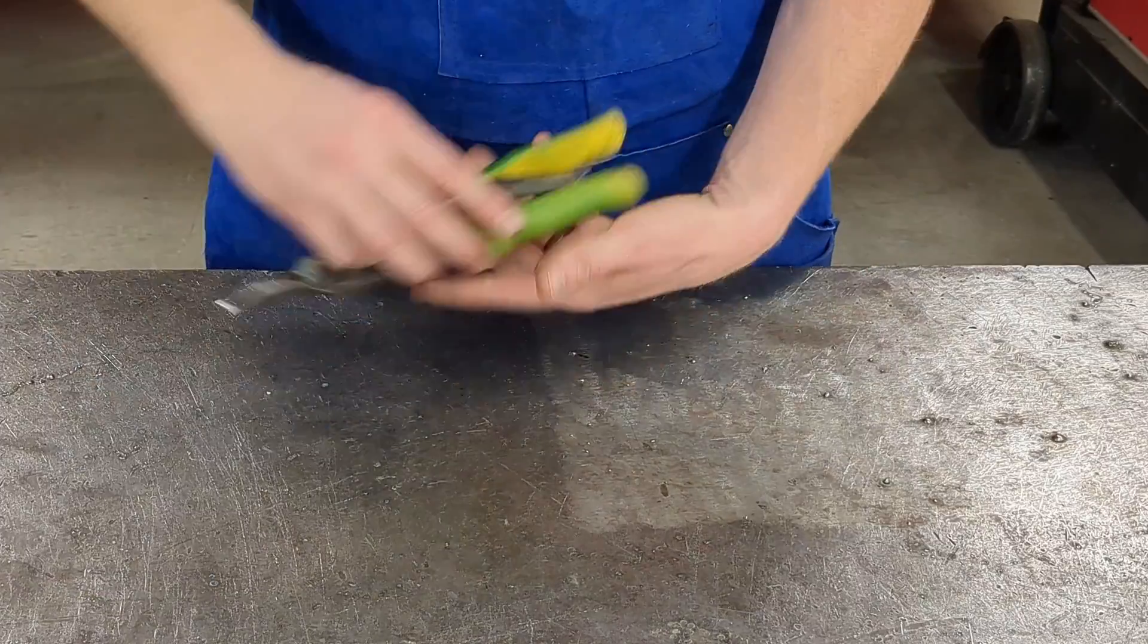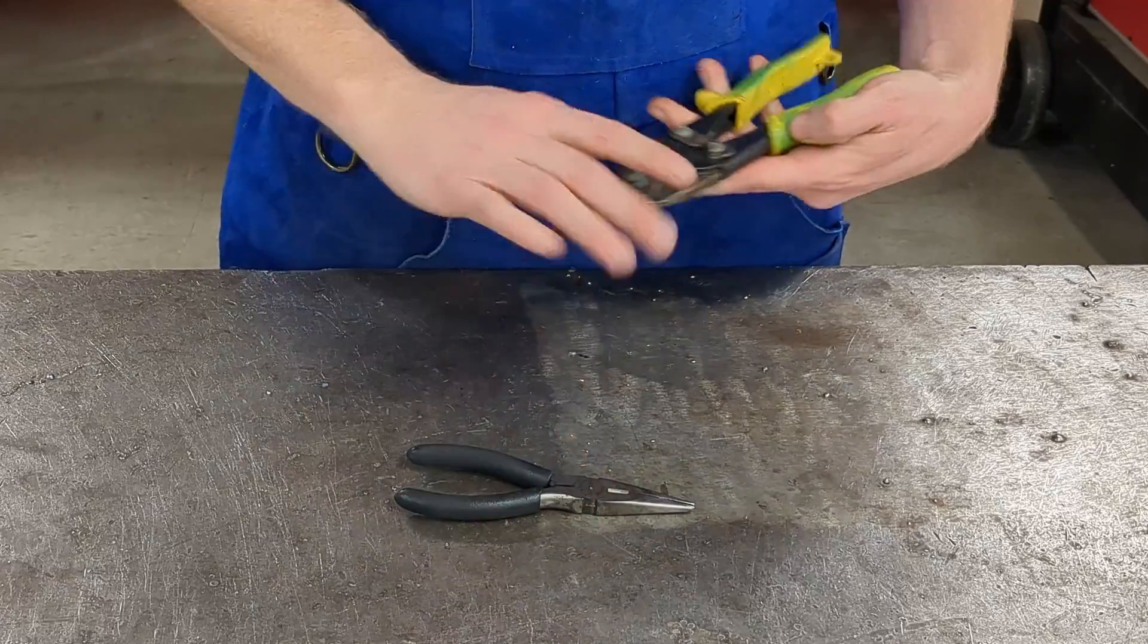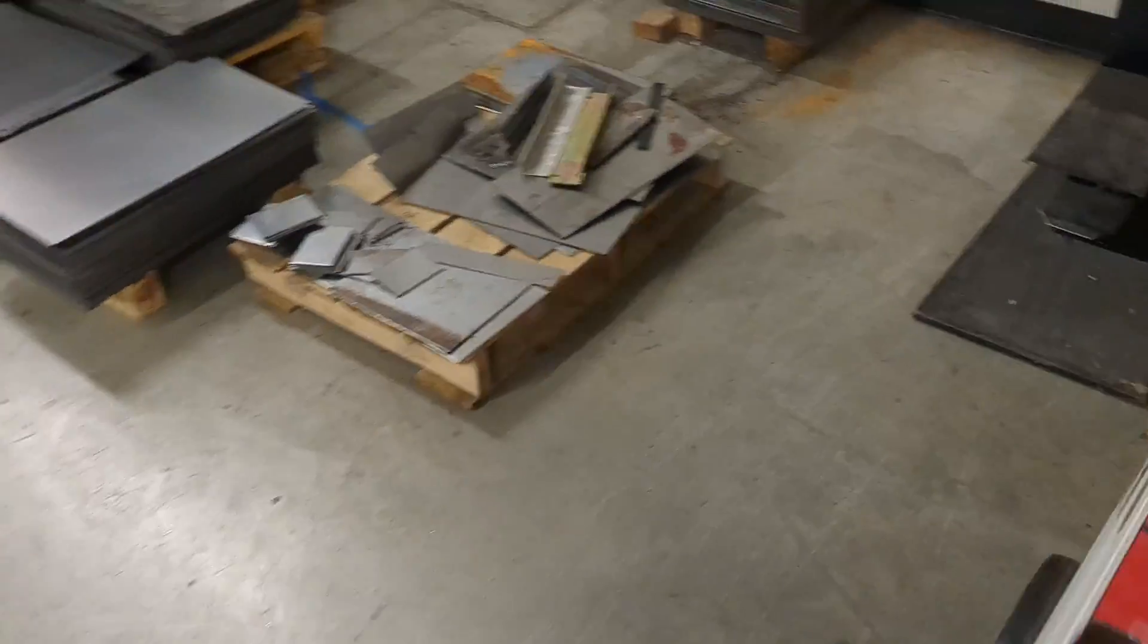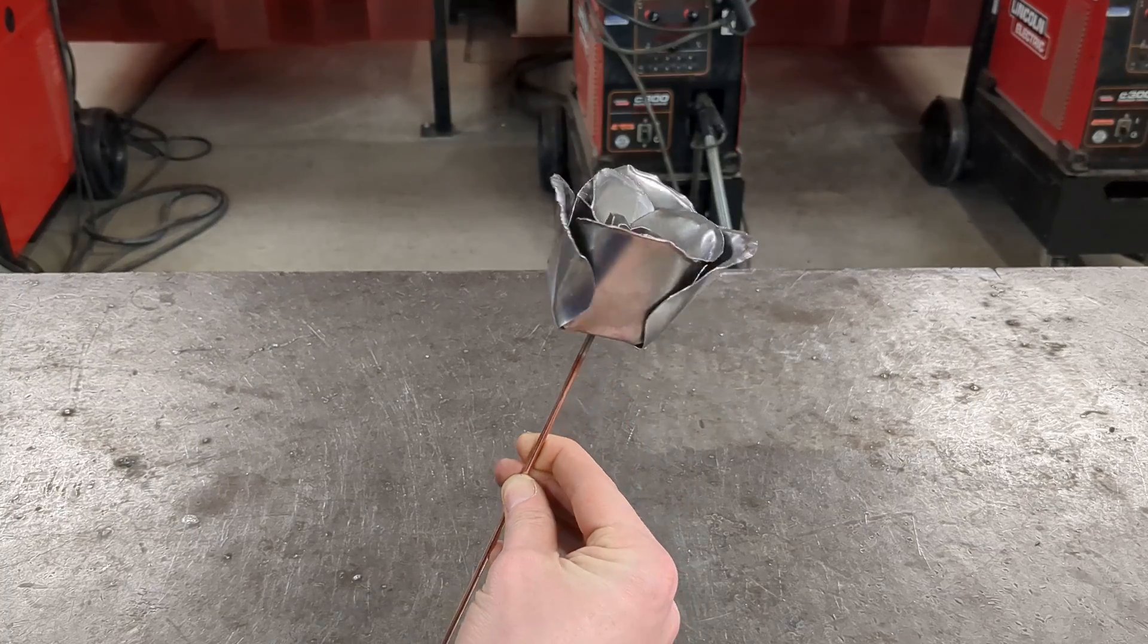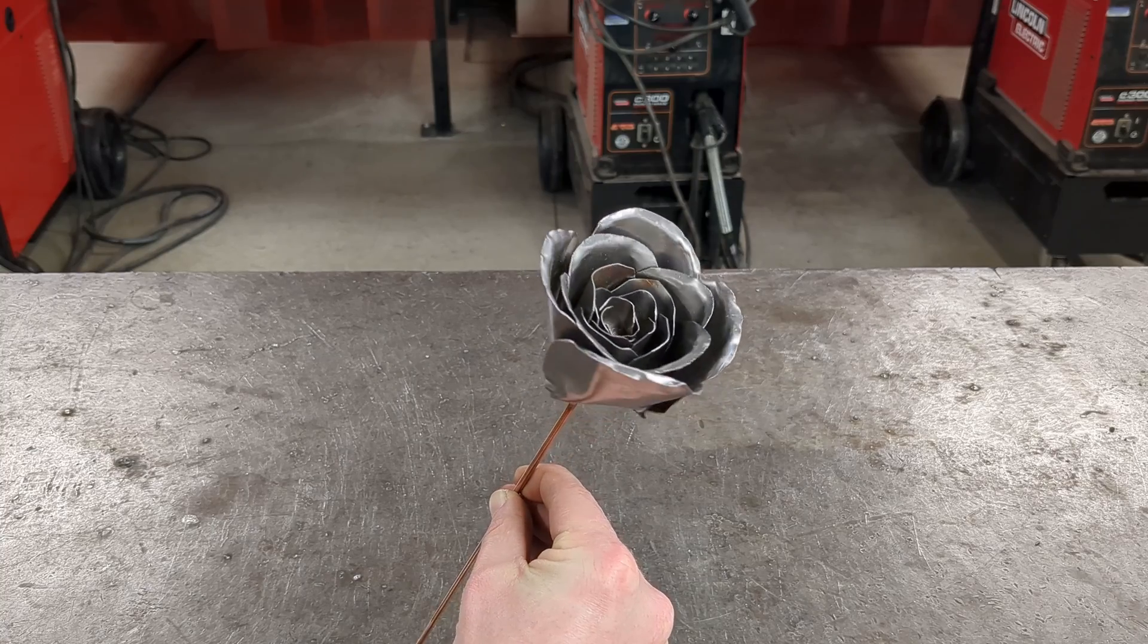And the great thing is we can do this whole project with basically three tools: some pliers, air compound shears, and a spot welder. I'll even get a little fancy to show you how to add a stem to it. But we'll get to that later.